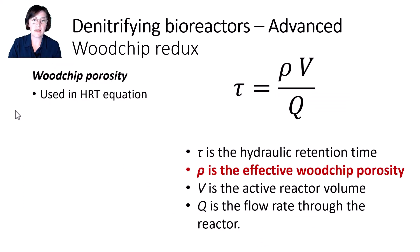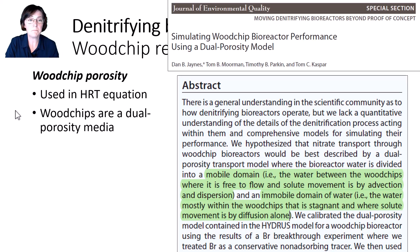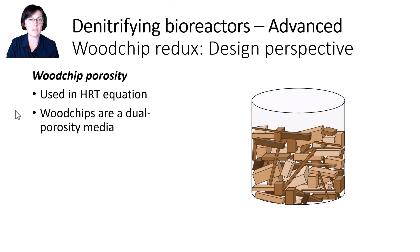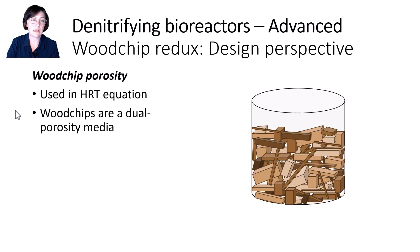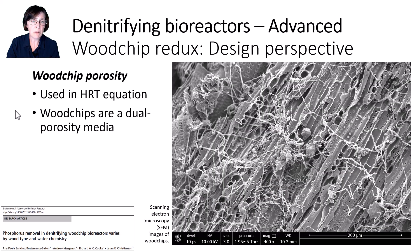Starting with porosity. Drainable or effective porosity is part of the hydraulic retention time equation. Woodchips themselves are a porous media, and woodchips in a bioreactor are considered to have dual porosity, which basically means there are big pores and little tiny pores. Most of the water in a woodchip bioreactor moves through the big void spaces, or macro pores, that are between the woodchips — I'm highlighting those in yellow here. But don't forget about the little tiny pores on the woodchips too. It is possible that some small amount of flow moves through the micro pores in the woodchips themselves.